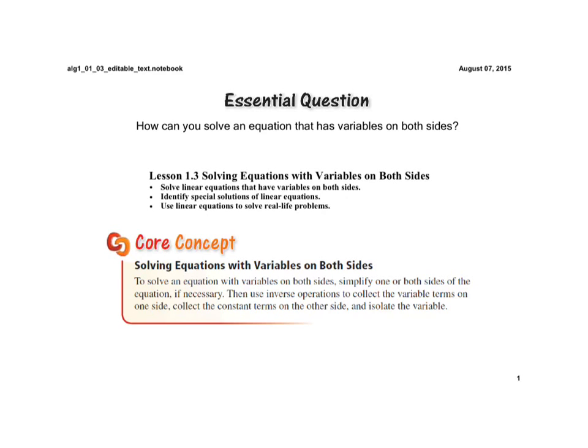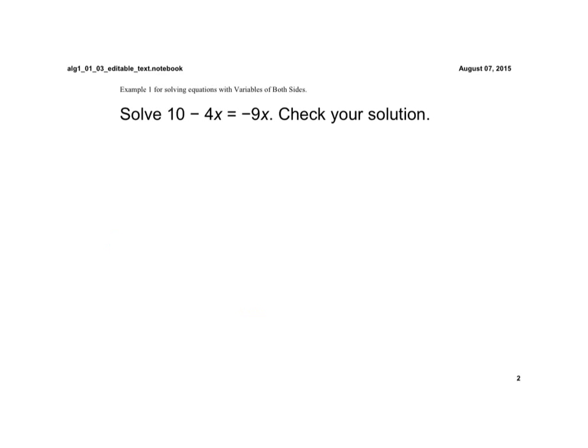We're going to do an example here on the next slide that will cover this core concept. If you notice, the difference between this problem and the problems we were doing is that we have a variable term on the left side and a variable term on the right side. To solve an equation, we have to have the variable terms to one side of the equal sign and the constant terms, or the terms with no variables, on the other side.